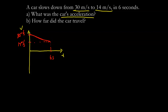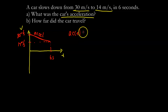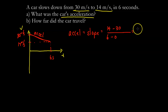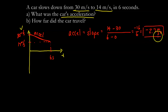The slope of the velocity versus time graph represents the acceleration. The acceleration equals the change in y over the change in x. The change in y is 14 minus 30, and the change in x is 6 minus 0. So 14 minus 30 gives negative 16, divided by 6, giving us negative 2.7 meters per second squared.